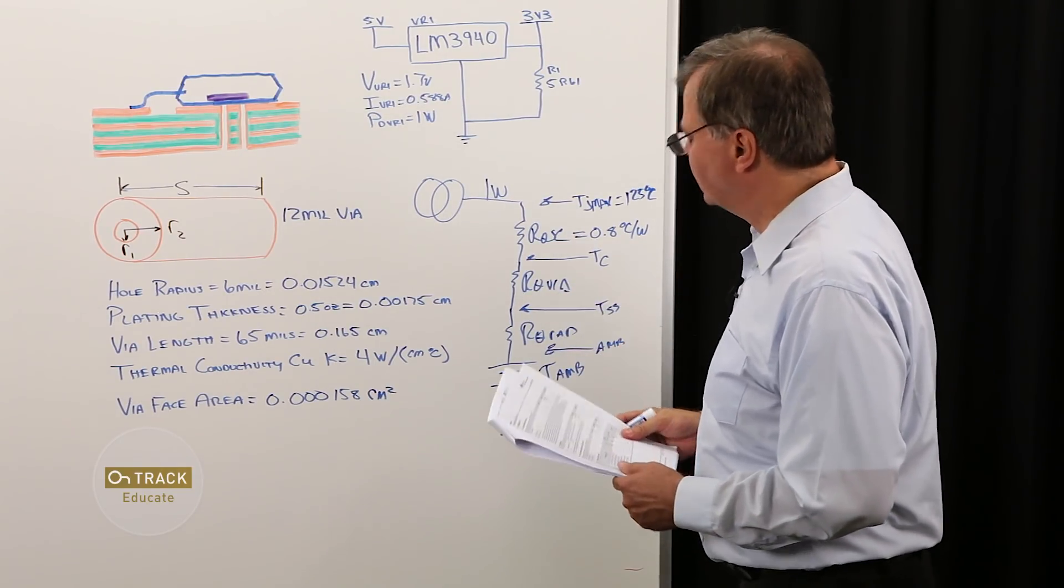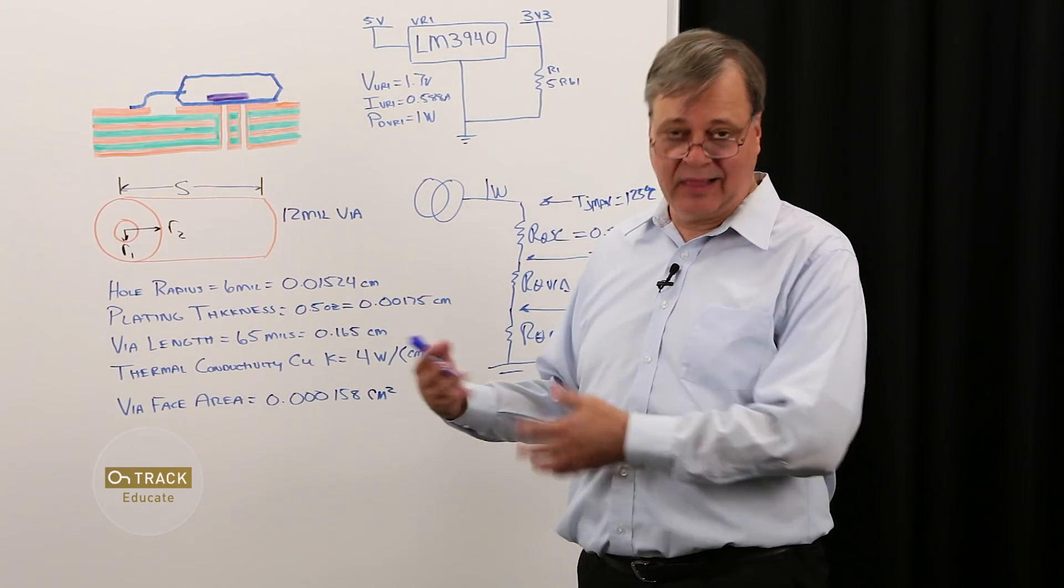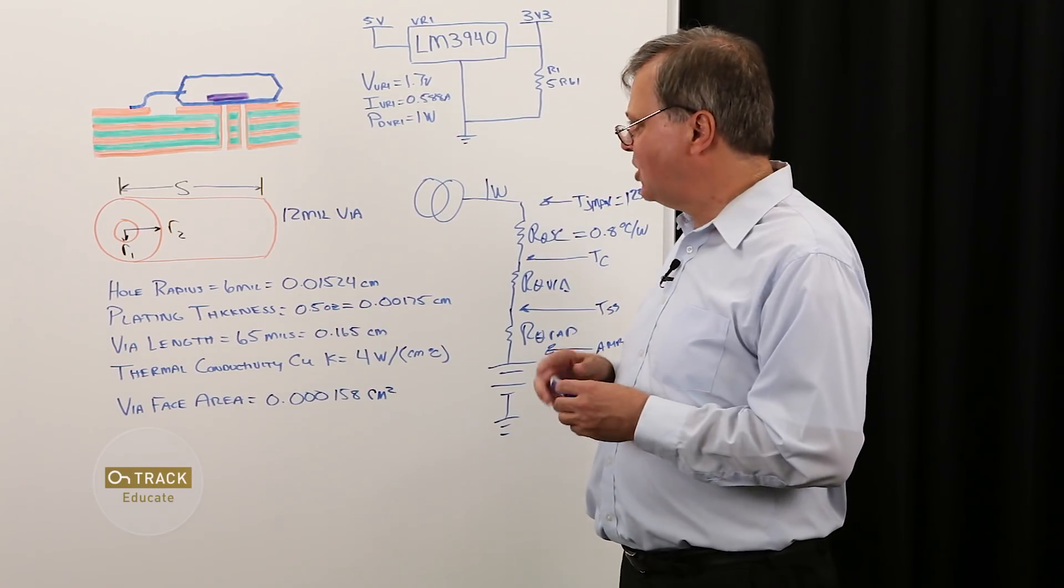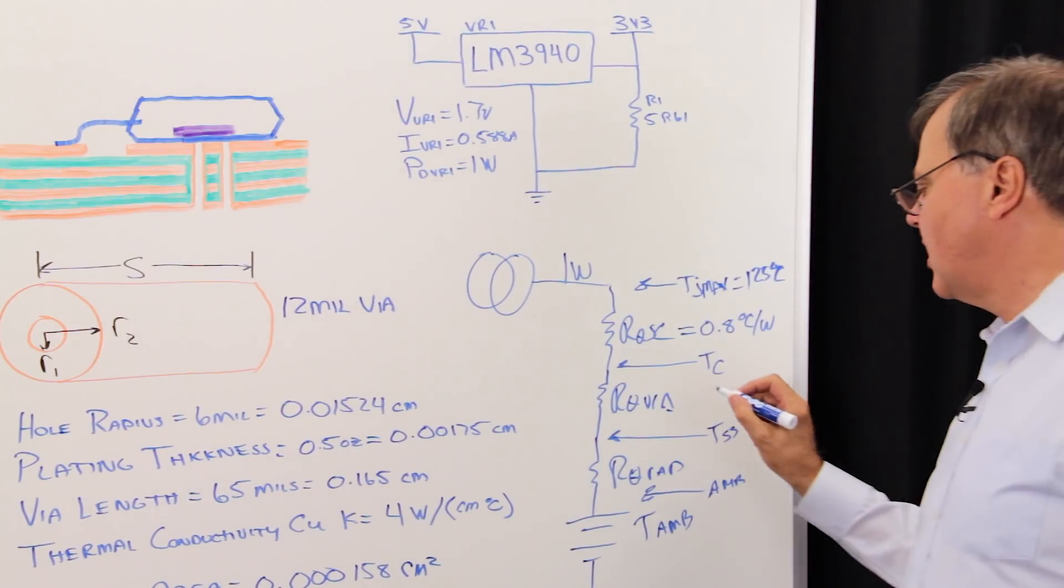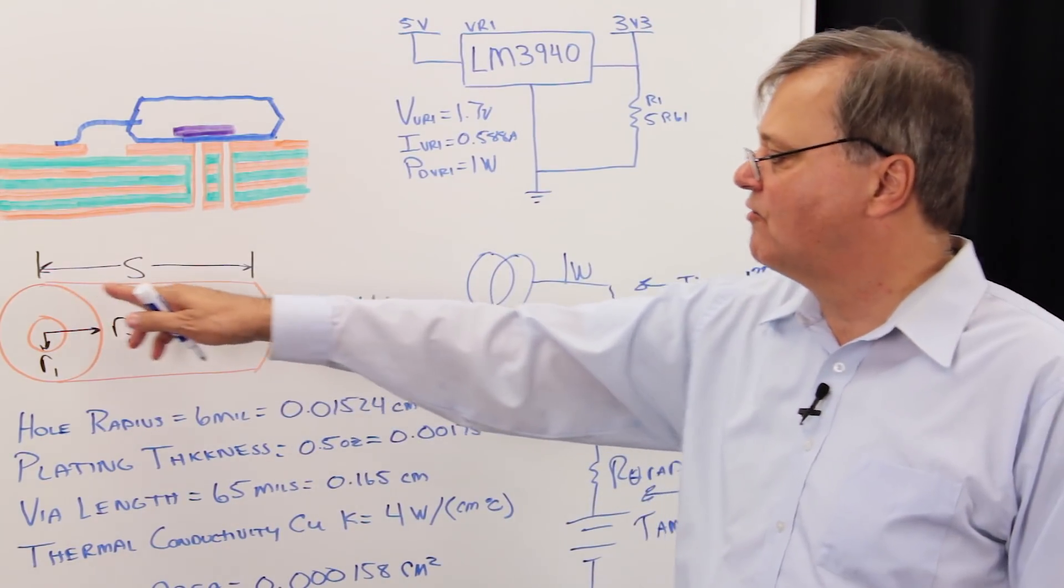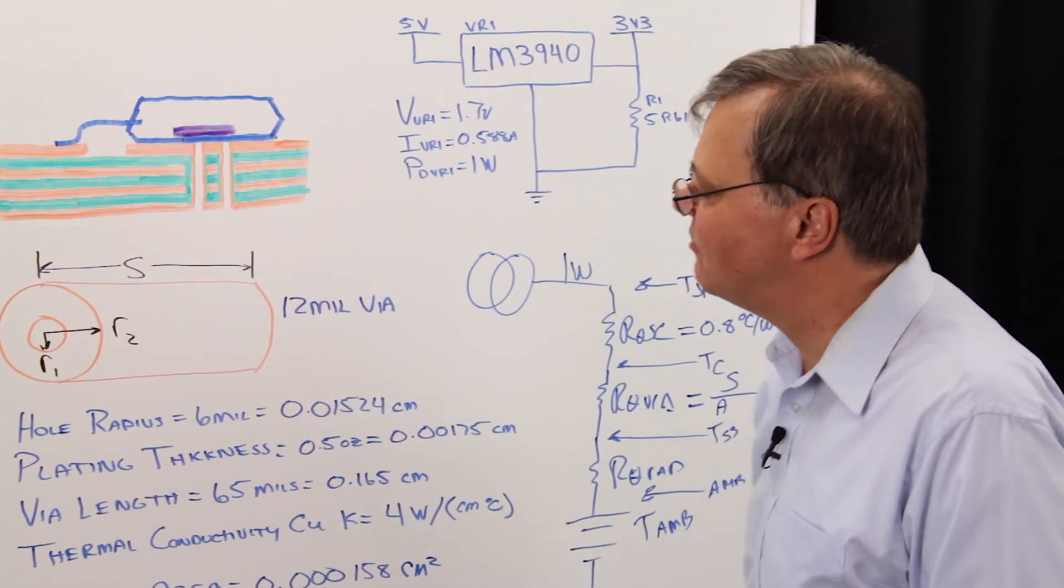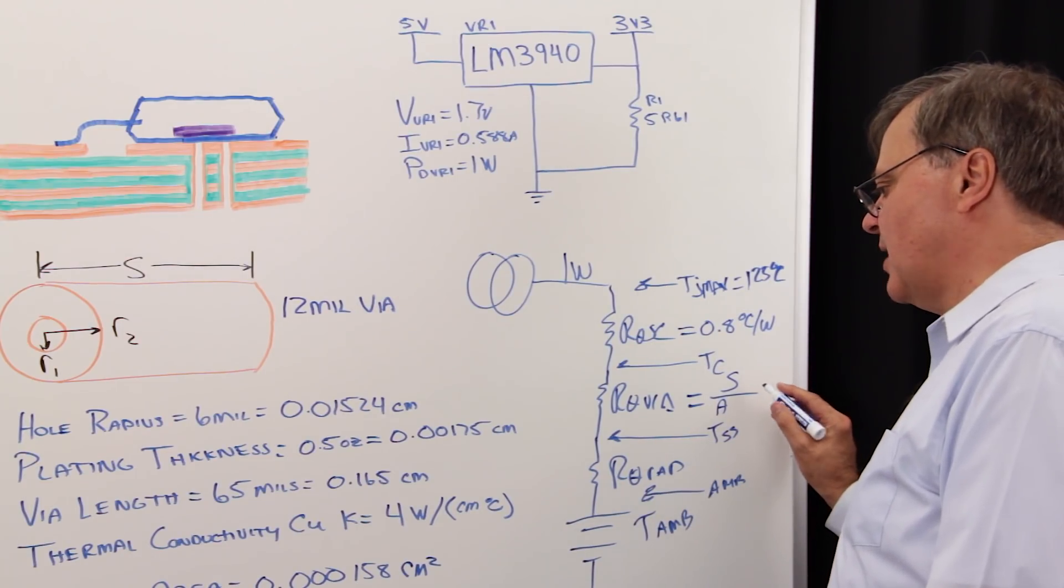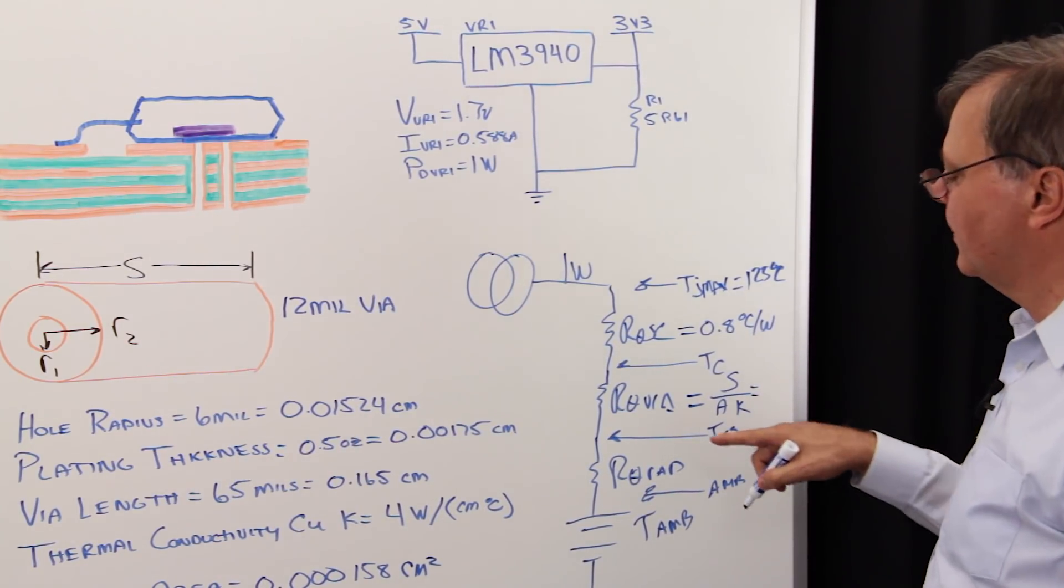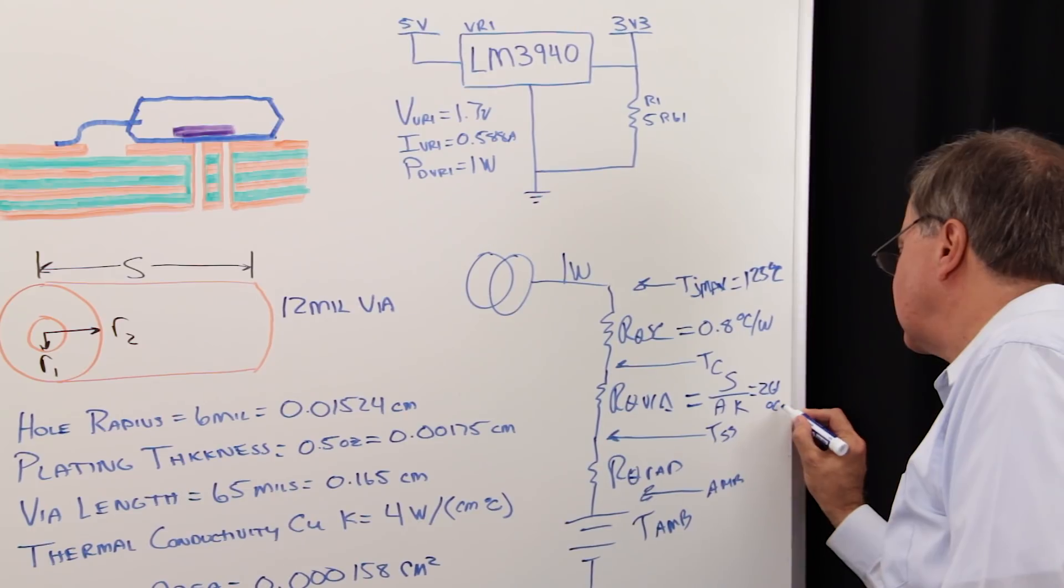Now we come to the thermal resistance of a via. In episode one, we talked about heat transfer through fluidic systems, which can be a liquid like water or air, as well as heat transfer through solid objects. When we're looking at the heat transfer through a solid, the thermal resistance is the distance traveled through the solid, in this case our via barrel length, divided by the surface area, in this case of our via, and then divided by the thermal conductivity constant. If we plug and chug on those numbers, the thermal resistance of our via comes out to 261 degrees C per watt.